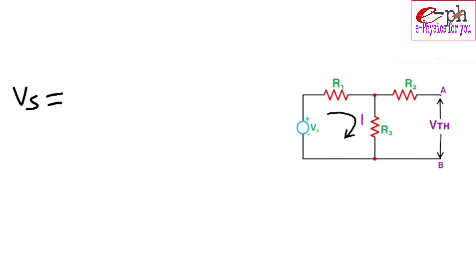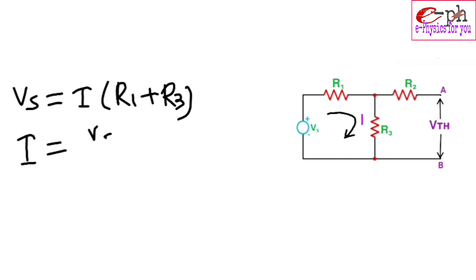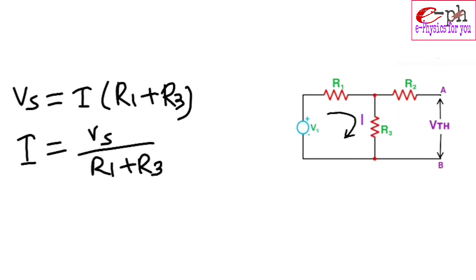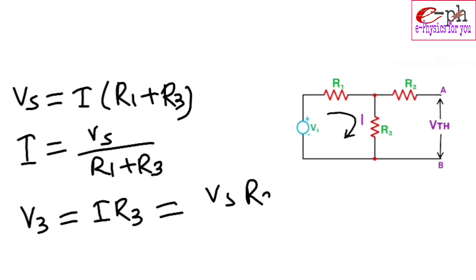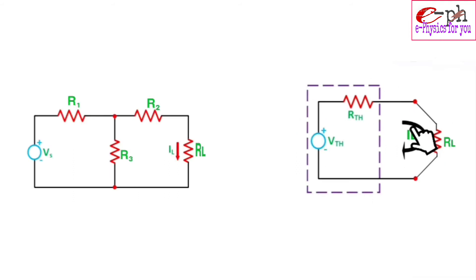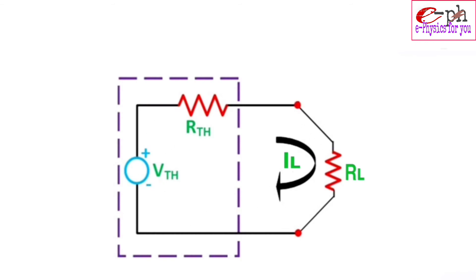Vs = I × (R1 + R3), so the value of I = Vs / (R1 + R3). Now the voltage drop across R3 is V3 = I × R3. Substituting the value of I, we get V3 = (Vs × R3) / (R1 + R3), which equals Vth. This is the simplified Thevenin equivalent circuit, where Rth and RL are connected in series with Vth.